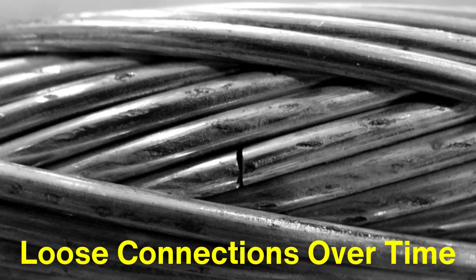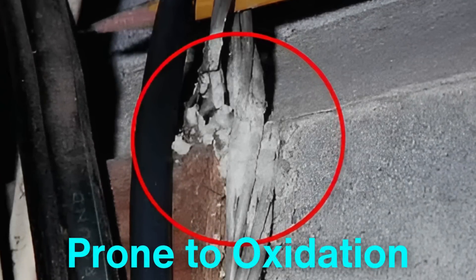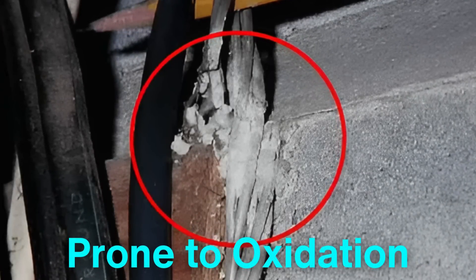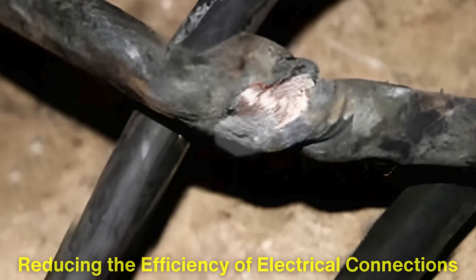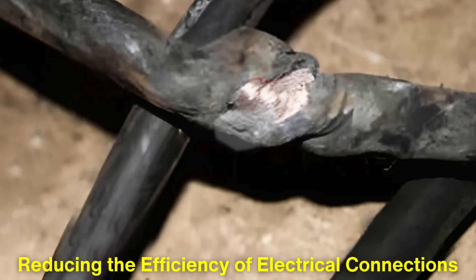Furthermore, aluminum is more prone to oxidation, and unlike copper oxide, the oxide layer formed on aluminum is not conductive, reducing the efficiency of electrical connections.